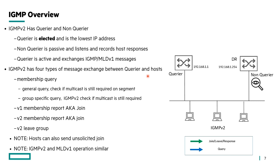Let's talk about IGMP. We have four types of messages, broken down further. There are querier messages that go from the querier to the hosts. We have two types: a general query, which checks for multicasts on a segment — that's the original IGMP version 1. Then with IGMP version 2 we have a more focused group-specific query, so we can check for specific groups rather than checking the whole segment.